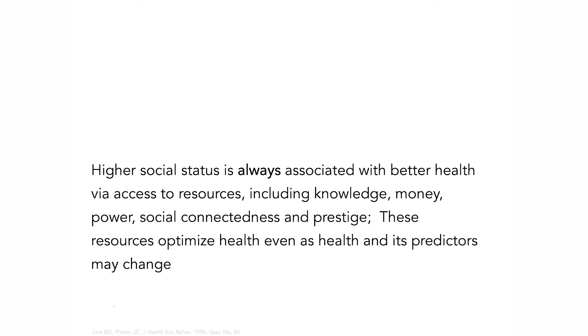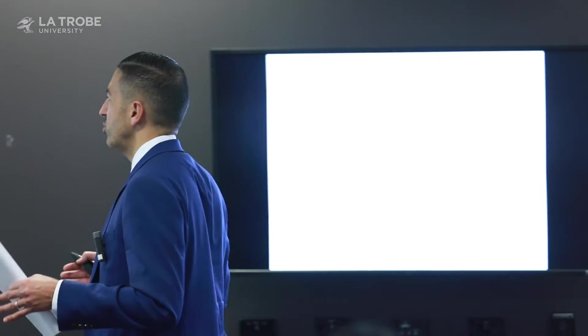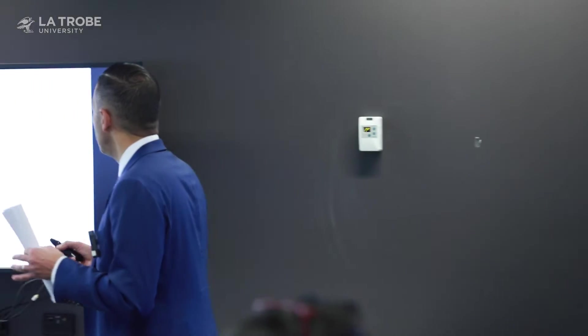The fundamental cause theory, principally by Bruce Link and Joe Phelan, makes a simple but profound point: social status is always associated with better health because higher social status gives access to resources — knowledge, money, power, social connections, and prestige — which optimize health even as health and its predictors change. This lays the stage for foundational causes as inextricably linked to population health, and for why it is impossible to productively think about populations and their health without thinking of populations as complex systems — because a systems approach allows you to account for foundational causes as no other approach really does.